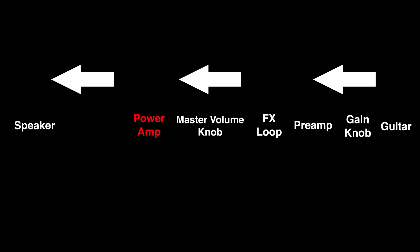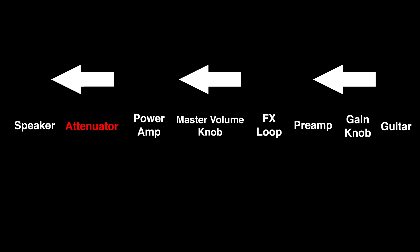Finally, the signal reaches the power tubes and is then sent to the speaker. If you send a strong enough signal to the power tubes, you can also get power tube distortion. Some people say they prefer the sound of power tube distortion to the sound of preamp tube distortion, but to get power tube distortion you usually need to have very high volume levels. To avoid this, you can attach what's called an attenuator between the output of the power tubes and the speaker. In the same way the master volume knob decreases the signal from the preamp tubes, the attenuator can decrease the signal from the power tubes so you can get power tube distortion at reasonable output volumes.